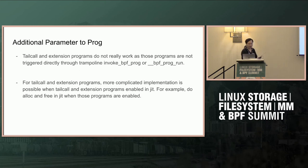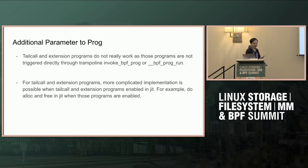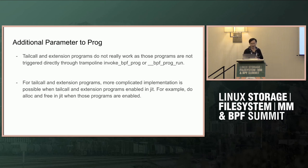Certain programs are invoked through a trampoline, so we also need to handle that: call BPF shadow stack alloc, populate the third argument, call the BPF program, then free. This approach largely works except it doesn't work for tail-call and extension programs, because these two program types are not invoked through either the trampoline or BPF program run — they are called inside the BPF program itself. Allocating the stack for these two kinds of programs would involve doing something in JIT, and the prototype looked complicated, so I moved to the second approach.